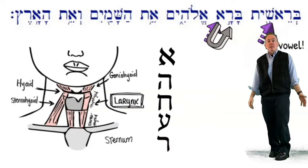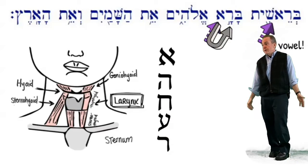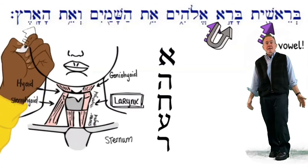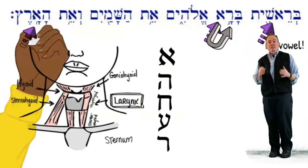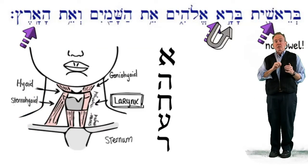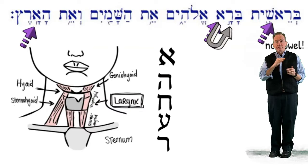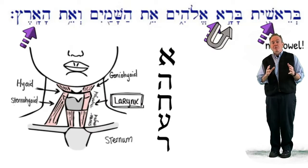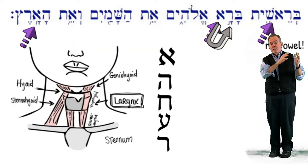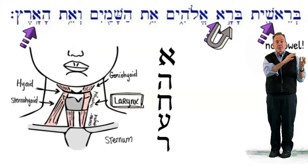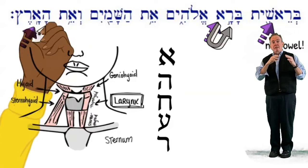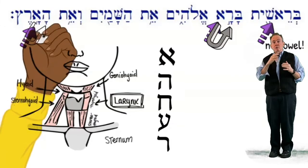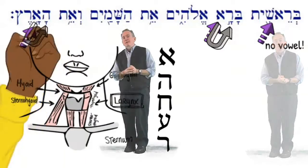The aleph in haaretz rejects the doubling dagesh of the definite article, and therefore the definite article compensates for that inability of the dagesh to go in the aleph, and the vowel under the he lengthens.